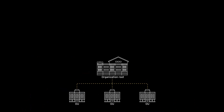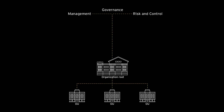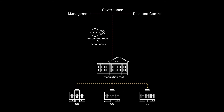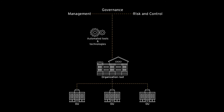The two key pillars of security by design are deployment and governance. First, automated deployment templates should be built with security baked inside. This ensures that all provisioned resources have the required security controls deployed as part of their code. It should be impossible to deploy anything outside of these deployment templates.